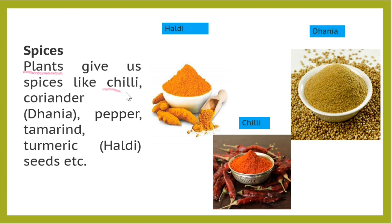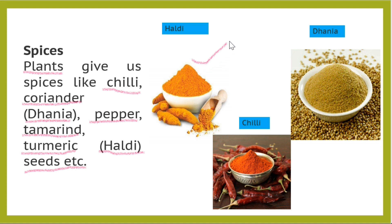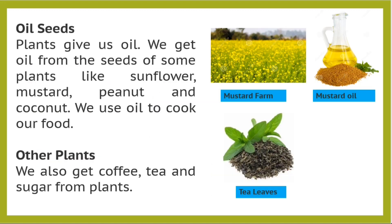Plants give us spices like chili, coriander — coriander means dhania — pepper, tamarind, and turmeric. These spices enhance the flavor of our food. Plants give us the seeds of these spices, like haldi powder from haldi seeds, dhania, and chili.